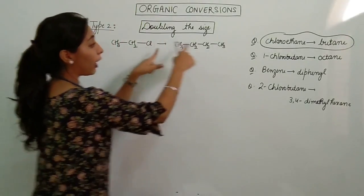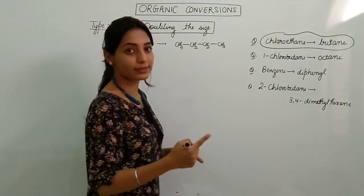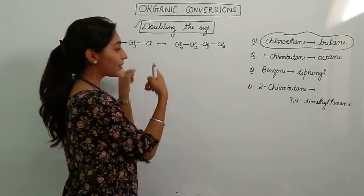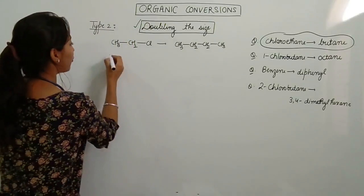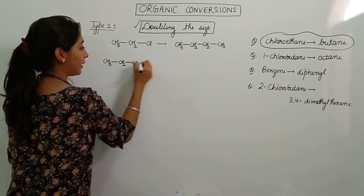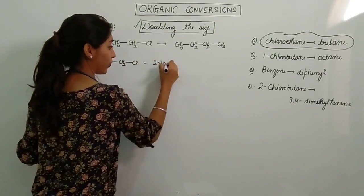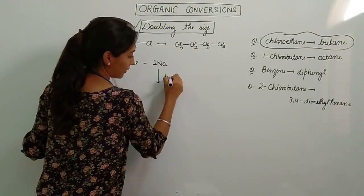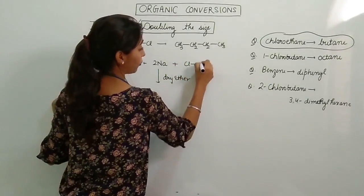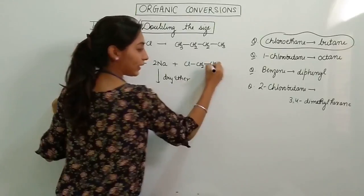The first thing that should come to your mind is, is this thing belonging to this type which I am talking about? How many carbons? Two. How many carbons? Four. Yes. So we can go for doubling the size. Again, not our size, the size of the molecule. So how to do? We will be taking CH3-CH2-Cl and we will be adding two molecules of sodium in the presence of sodium, in the presence of dry ether, another molecule I have to take, chloroethane.